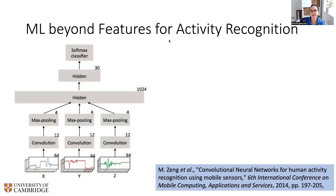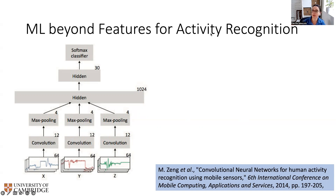We'll start with a translation of what has been done in deep learning in the general area of imaging. Deep learning has boomed a few years ago and has shown particularly good performance in images and video applications. In activity recognition, the first thing that was tried was to bring these techniques to the data and see if they could beat existing traditional machine learning, beyond feature extraction and classification.